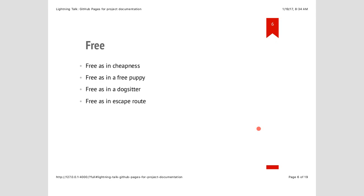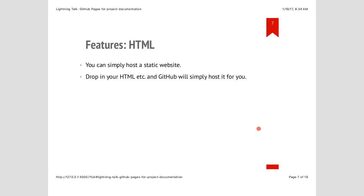GitHub generates from that source your website, and then they host the resulting website — and that's pretty cool. This has got a lot of free to it. It's cheap in that they're not charging you anything. It's free as in a free puppy in that if you want to dig into Jekyll and all the power of this, there's lots to adopt. But it's also free in the sense of a dog sitter in that you don't have to do all that, because what GitHub really wants to do is just run Jekyll for you and you can focus on the content. And it's free as in an escape route in that this is all open source software — if you decided you didn't like GitHub or they couldn't keep running it for free, you could take your website and generate it somewhere else without really having to start over.